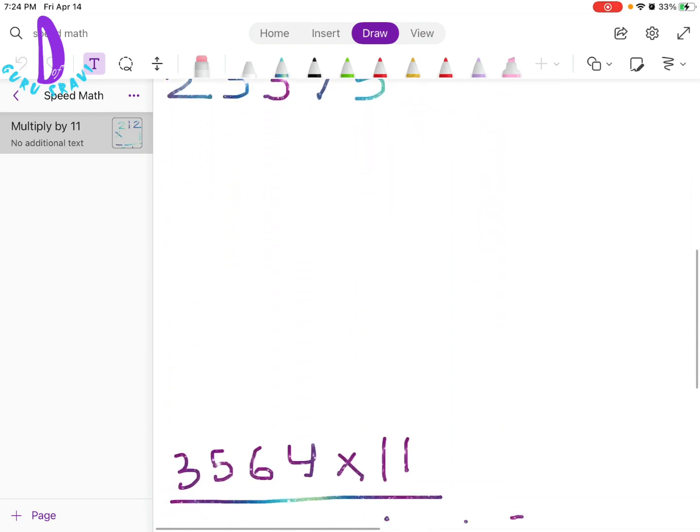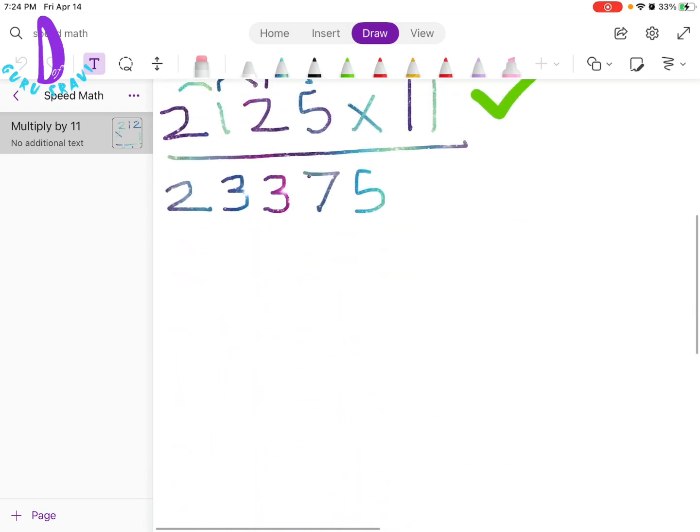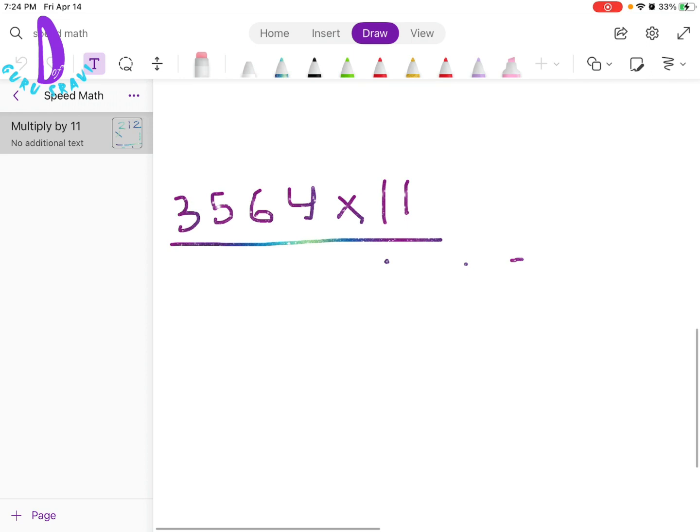So, there's also a tricky part to solving it this way. Let's see. Let's try to solve this question. So, 3564 times 11. We're going to solve this.